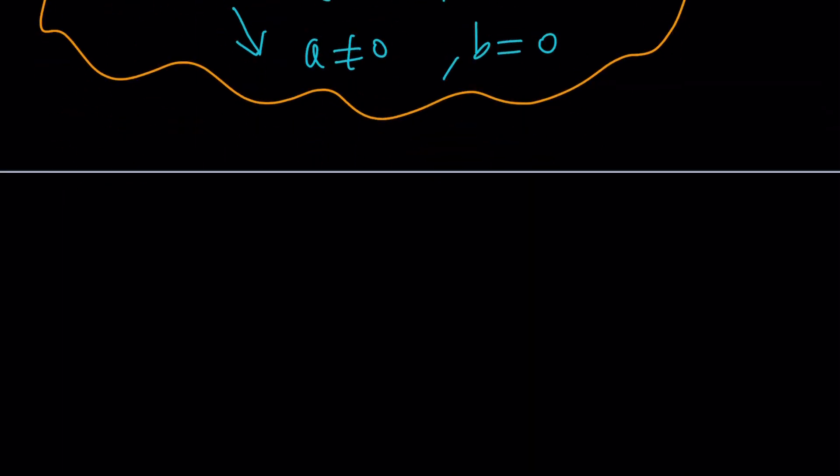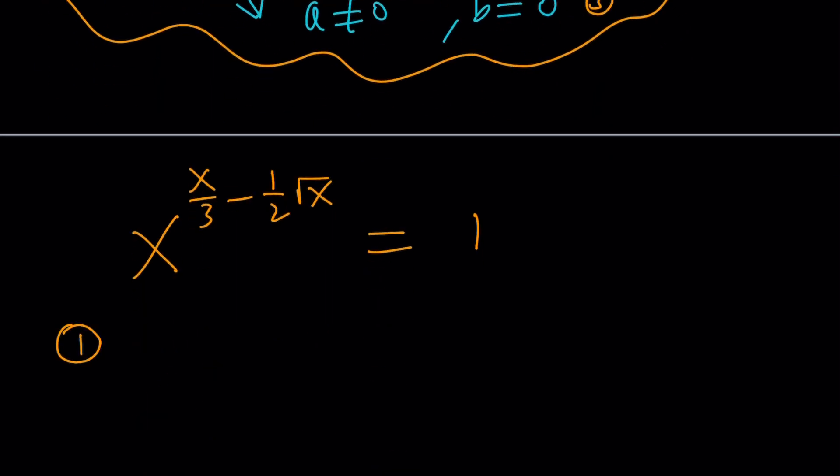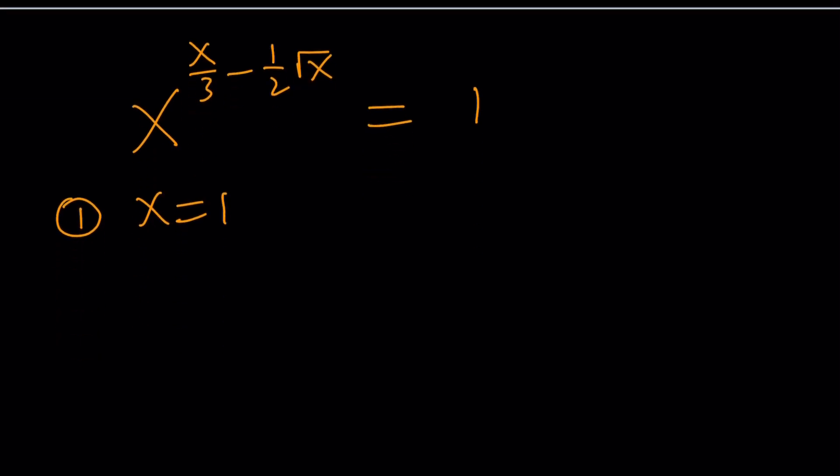So our equation is, one more time, x to the power x over 3 minus 1 half root x equals 1. So a is x, b is the exponent. Make sense? Now let's go ahead and look at each case. And I'm going to number these. Number 1, number 2, and number 3. First case number 1. The simplest one, x equals 1. Done. Easy, right? You don't care about the exponent because you don't. 1 raised to any power is always 1.